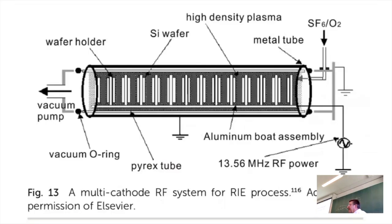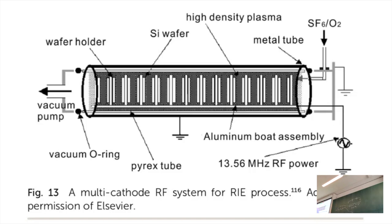Reactive ion etching is one crude but effective method. Silicon wafers are placed in a Pyrex tube container and exposed to radio frequency power of 30 MHz — basically like a microwave — together with reactive gases. In that way you create a high-density plasma. It is not a focused femtosecond laser, but it is a plasma, so it is very reactive. This etching eats away the silicon in a particular manner and makes a nanostructure.